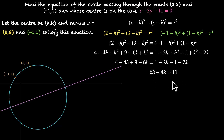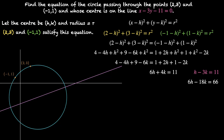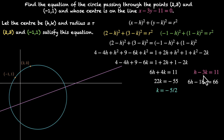That's one equation in h and k. Plugging h and k into the line equation x minus 3y minus 11 equals 0 gives h minus 3k equals 11. To solve, multiply that equation by 6 to get 6h minus 18k equals 66. Subtracting from 6h plus 4k equals 11 gives 22k equals minus 55, so k equals minus 5 by 2. Plugging k back in: h plus 7.5 equals 11, so h equals 7 by 2. The center is 7 by 2 comma minus 5 by 2.